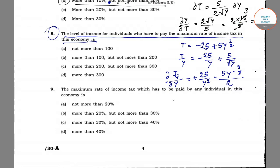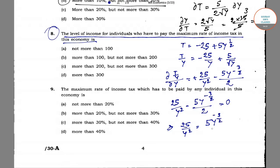Setting the first derivative equal to zero: minus 25/y squared minus 5y to the power minus 3/2 divided by 2 equals 0. Solving this, 25/y squared equals 5y to the power minus 3/2 divided by 2. Cross-multiplying, 50 equals 5 into y to the power half, giving y to the power half equals 10, so y equals 100.